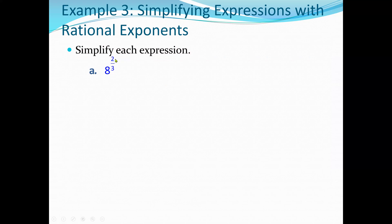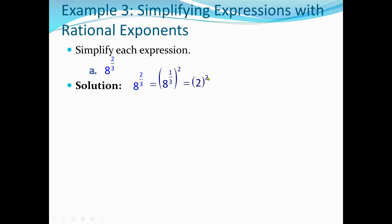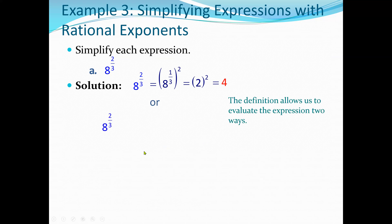Let's simplify each expression. First, we have 8 to the power two-thirds. We can break this apart: one-third gives the cube root, and the cube root of 8 is 2. So we get 8 to the one-third, raised to the power 2, which is 2 squared — giving 4. Alternatively, 8 to the two-thirds equals 8 squared to the one-third: 8 squared is 64, and the cube root of 64 is also 4.